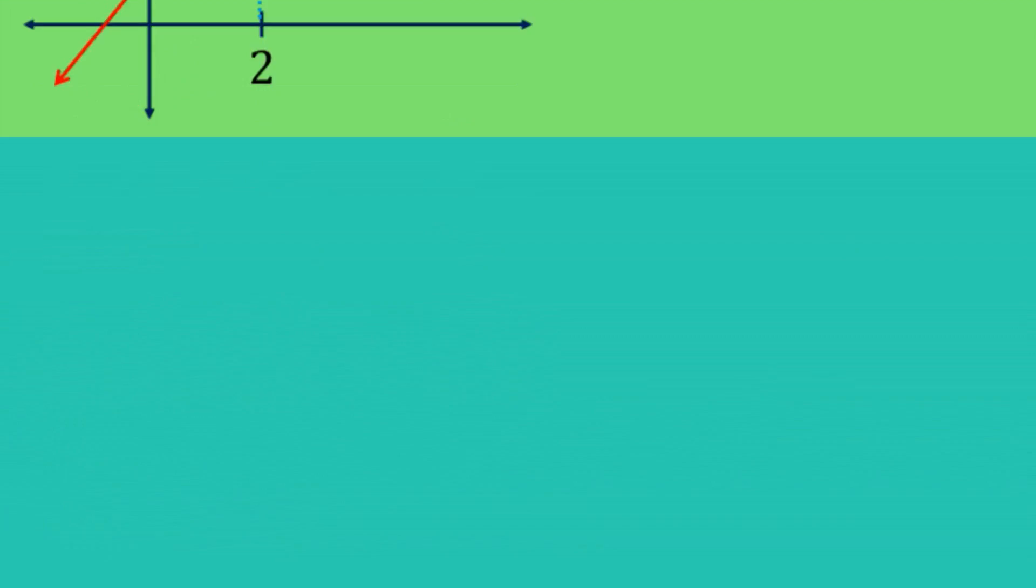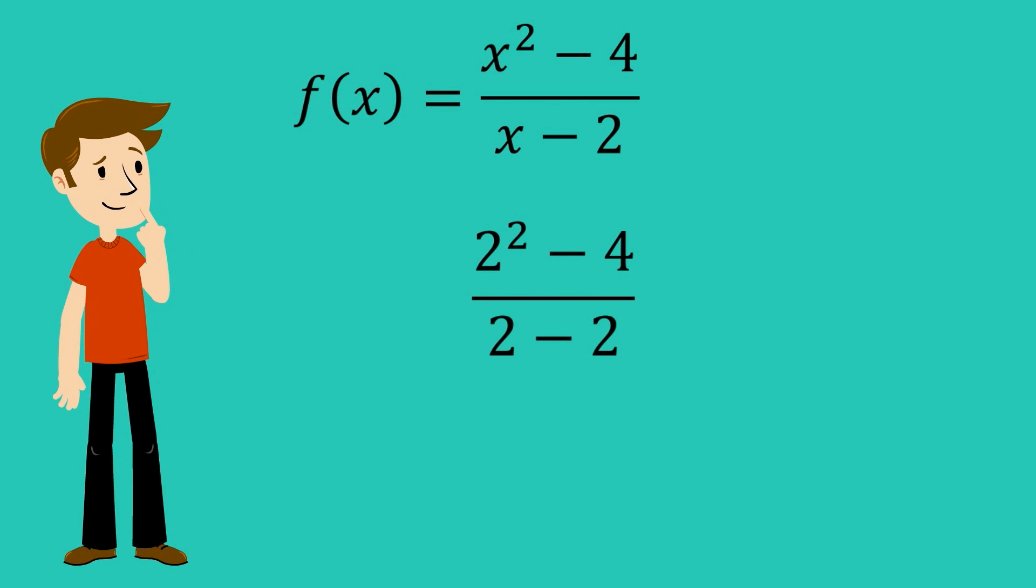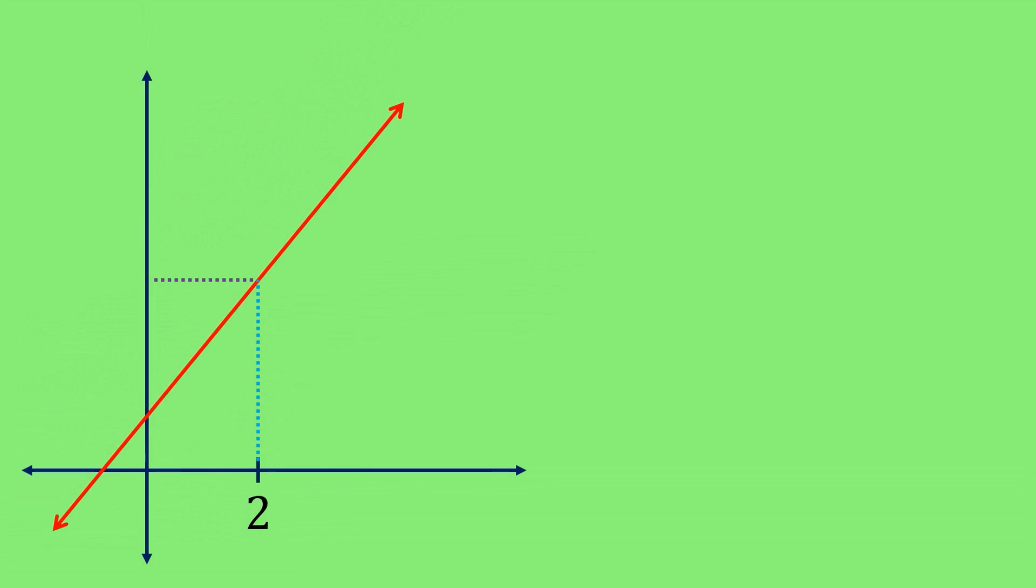If you try and find this value by instead plugging in 2, something strange happens. When you plug 2 into the function, you get 0 divided by 0. This shows that the function doesn't actually ever get to 4. In fact, a quick look at the graph shows a hole right where 4 is.